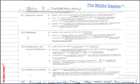Topic 9 is Superposition. Under this topic we have four main subheadings: stationary waves or standing waves, which we had a mild introduction to in the last chapter, then there is diffraction, interference — mainly two-source interference — and we will also be talking about diffraction gratings.